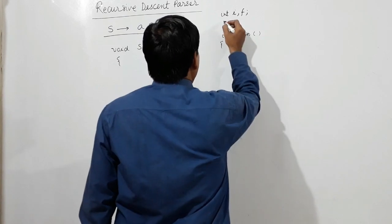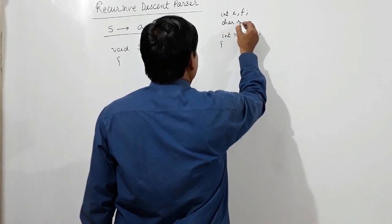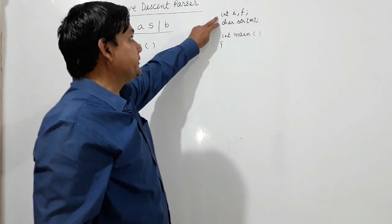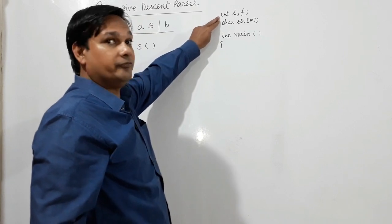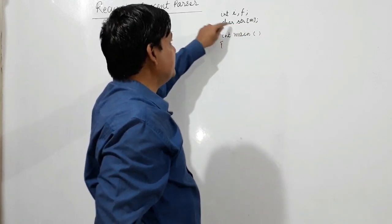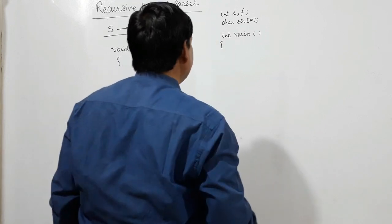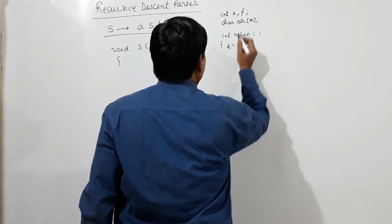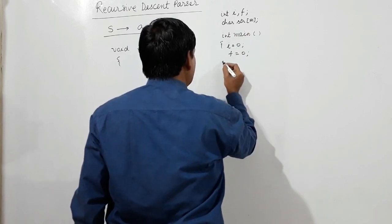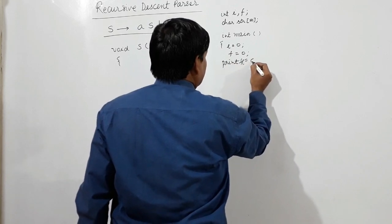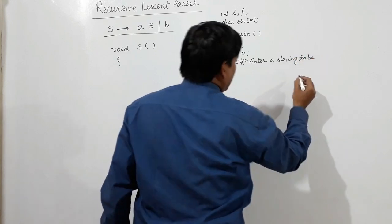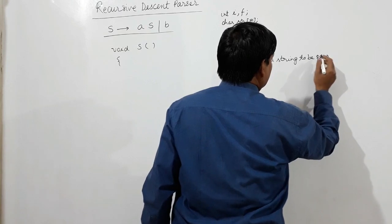And I am taking one character string. I am declaring these i and f as integer type which is global, and character str, this is a string which is global declared. Now I initialize this item, initialize 0 here also, equal to 0 and f equal to 0. Now printf enter a string to be parsed.